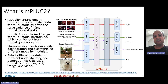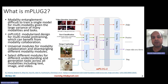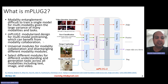MPlug2 tries to handle multiple modalities being modeled together, because after all it's a multimodal model. The way MPlug2 solves this problem is by having a very modularized design. It has modality-specific encoders, but at the same time it also has universal layers. Universal layers try to bring in multimodality collaboration, while the modality-specific modules essentially try to handle the modality entanglement problem.